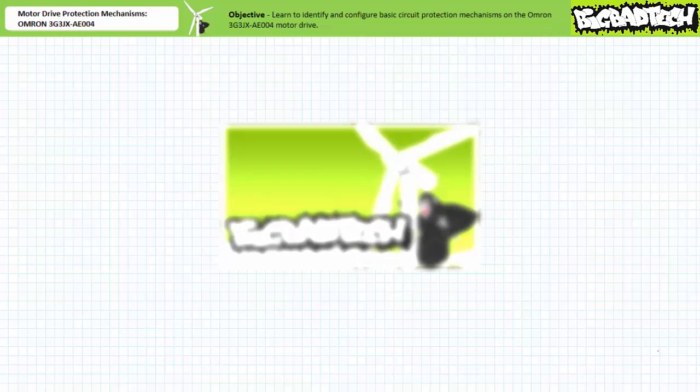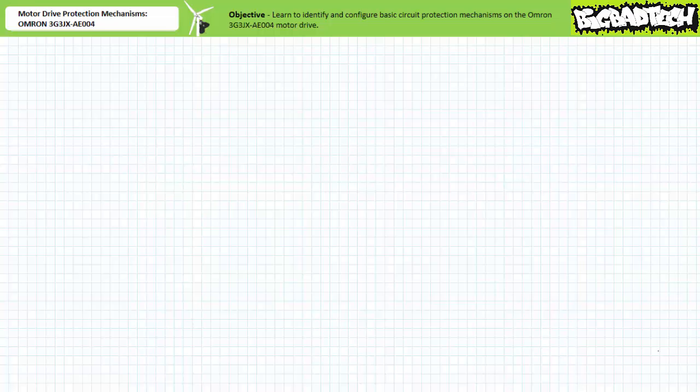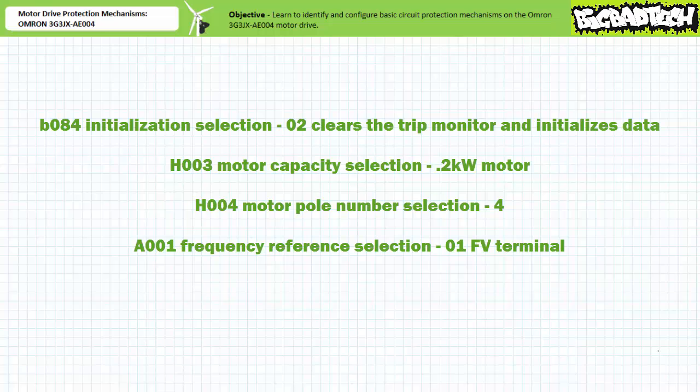Since we'll be dealing with this particular manufacturer's parameter programming process, it may be helpful to download the associated datasheet and user manual. Before making use of the OMRON 3G3JX AE004 motor drive, we'll initialize the drive to a default state and clear any errors using initialization and protection parameter B084. Then we'll program it to recognize a 200 watt motor with a nominal rotational speed of 1800 RPM using motor settings parameters H003 and H004.